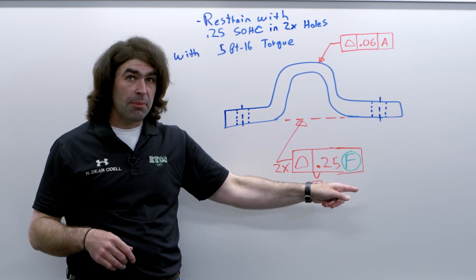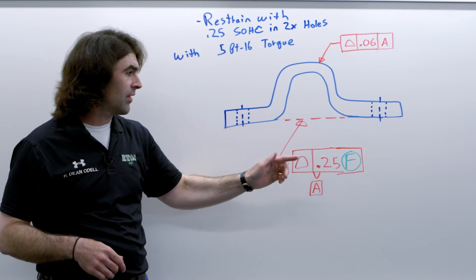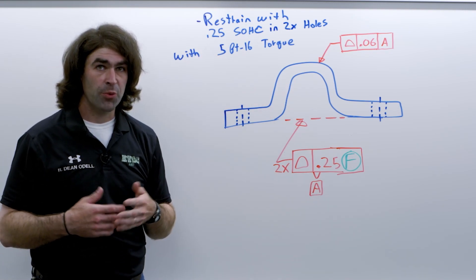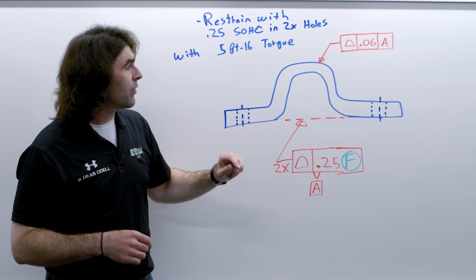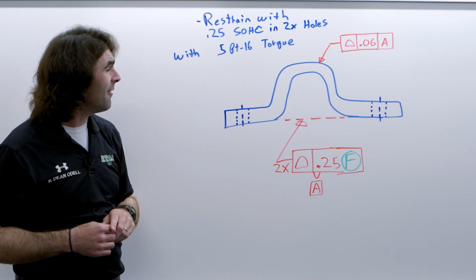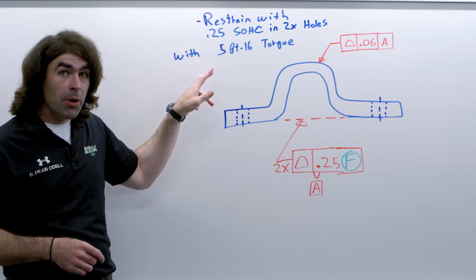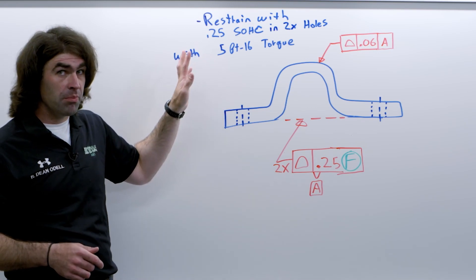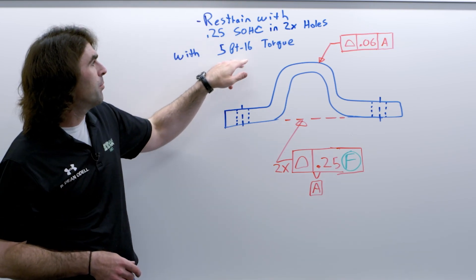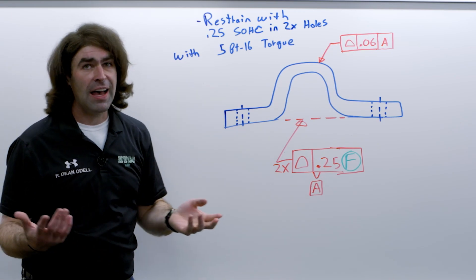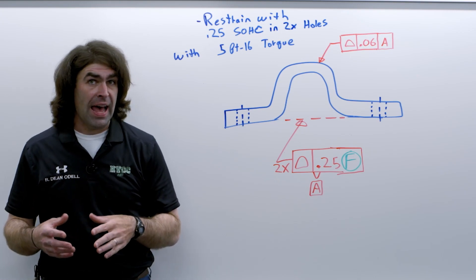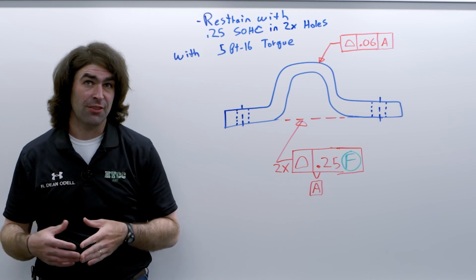This is where your free state modifier will come in. There's no real reason for this to be held to a super tight tolerance if you're going to restrain it at inspection. So we've got our regular profile — 60 thousandths to datum A — and our note. This is probably the most important thing: you want to be as specific as you can. Restrain with quarter-inch socket head cap screws in both holes — hole one, hole two — with five foot-pounds of torque, or whatever your torque spec is. That gives a good description of how and how much force is to be applied at inspection.